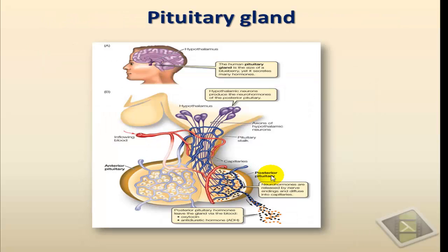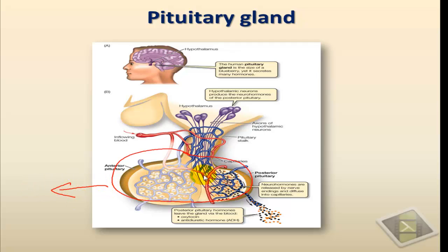Let's first look at the pituitary gland, which consists of two parts. Looking at the direction in which the gland sits in the head, this part here is facing forward — that's the anterior. And this part here is facing backward, toward the back of the head — that is the posterior. So that gives us the posterior pituitary gland and the anterior pituitary gland. This division is not only anatomical but also functional.